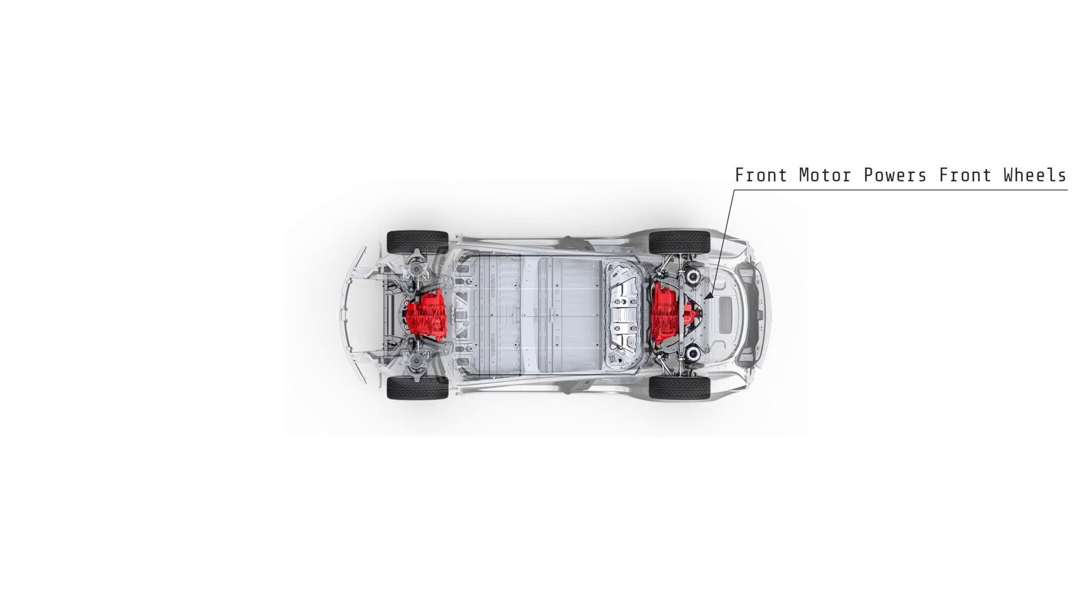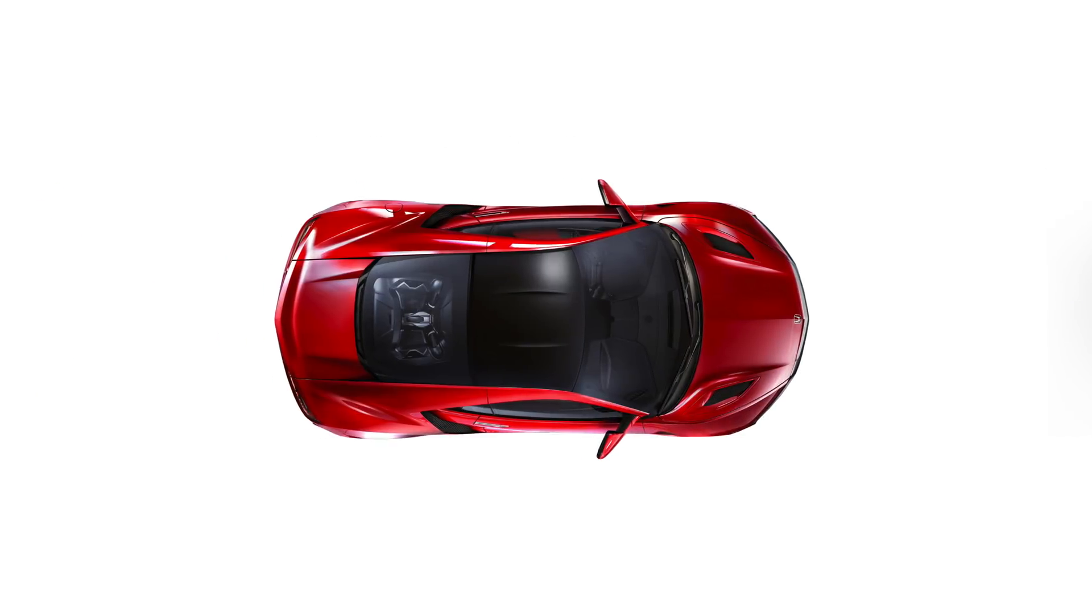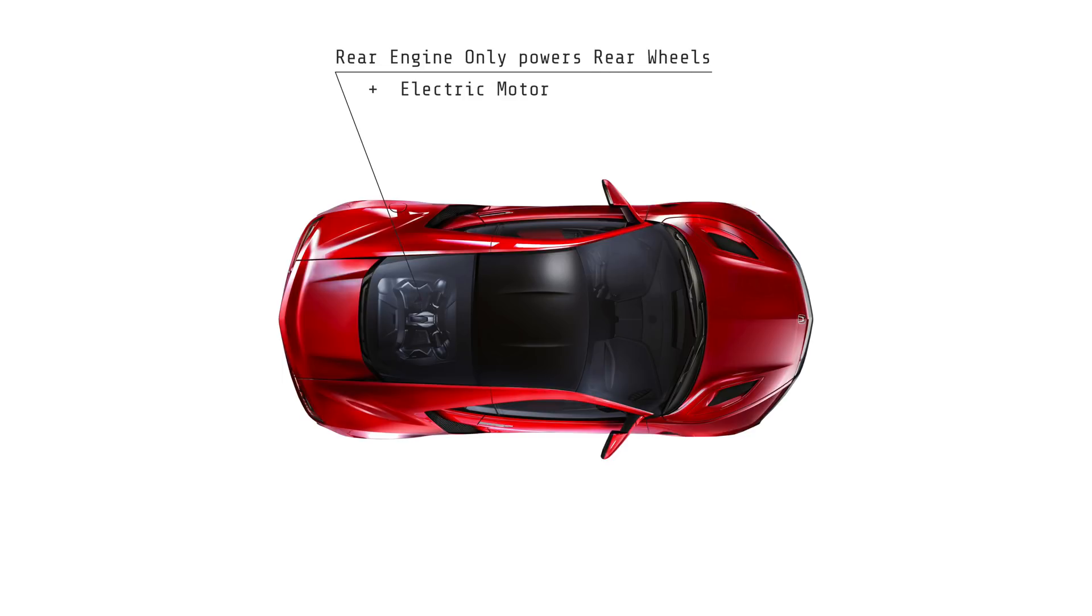All-wheel drive Teslas have two motors, one for the front wheels and one for the rear wheels. They don't need to route power from front to back from a single engine. Cars like the Acura NSX actually have two independent motors for each of the front two wheels to give the car all-wheel drive.